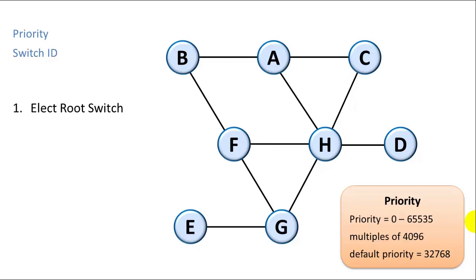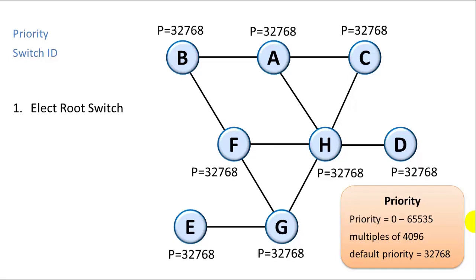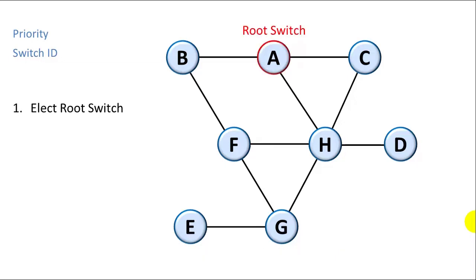And you can do that using the priority just by setting the priority to a lower number for the one you want to force to be the root switch. In this case we're going to assume that they all have a default priority, and the one that will be selected to be the root switch will be A because that's the lowest address or the lowest switch ID.